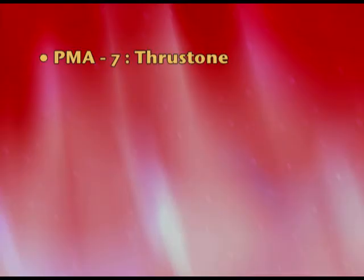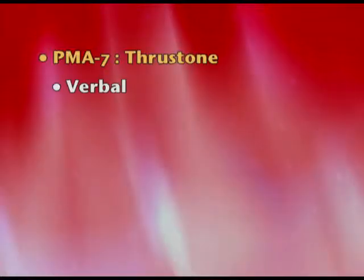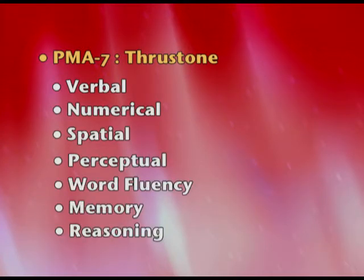The third theory says that intelligence comprises seven factors. This was given by Lewis Thurston, and is called Primary Mental Abilities, which are seven in number. Spearman's S factor and Thurston's theory were the basic foundation for aptitude testing. The seven abilities are: verbal, numerical, spatial, perceptual, word fluency, memory, and reasoning. All of these are measured separately in aptitude testing, that is, in career assessment.